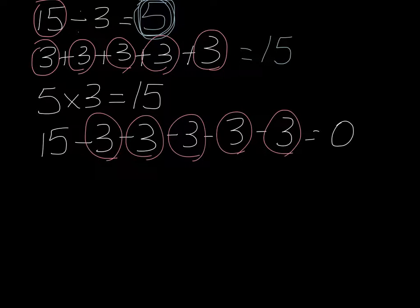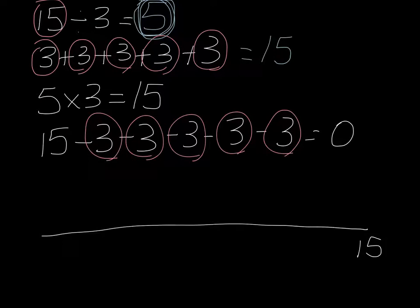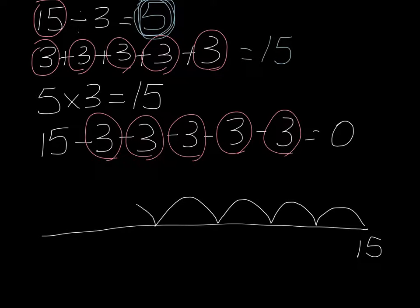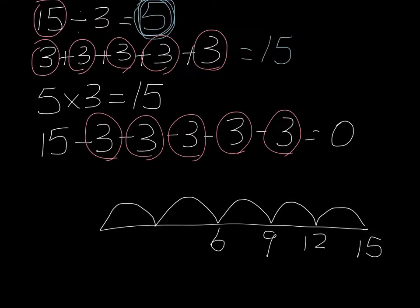The last way that we're going to do this is we are going to use a number line. So we're going to draw our number line here, and we are going to draw 15 here and jump back in groups of 3. So that's 12, 9, 6, 3, 0. Our number line was a bit too big so we'll make it a little bit smaller. And so this amount here is 12, 9, 6, 3, 0.